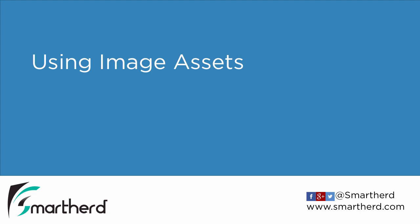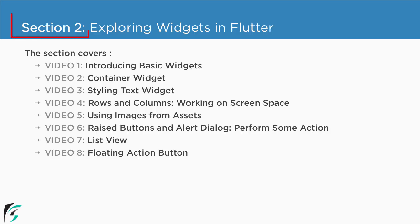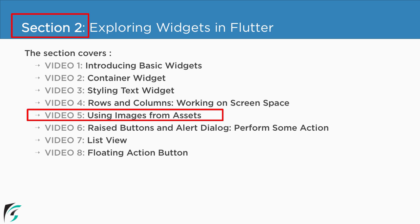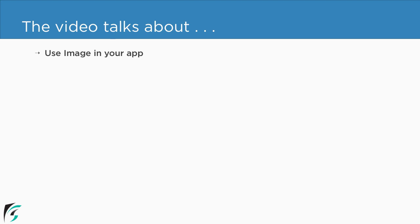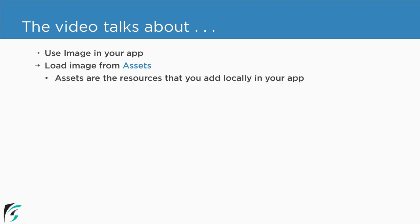In this video we will see how to use images in our application by loading them from the assets. The assets are basically the resources that we add locally in our own application. All assets such as images are locally defined in our application and are not loaded from the server.